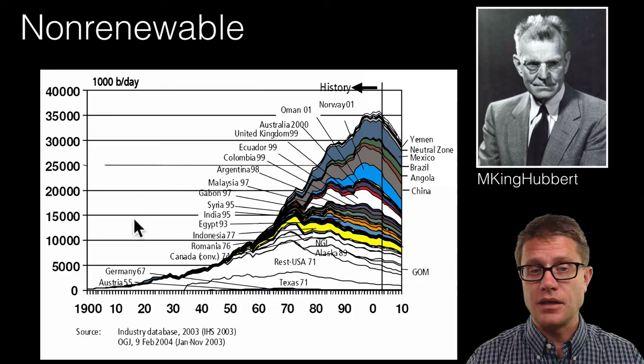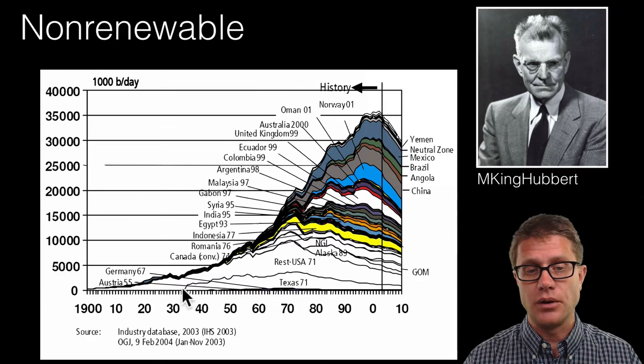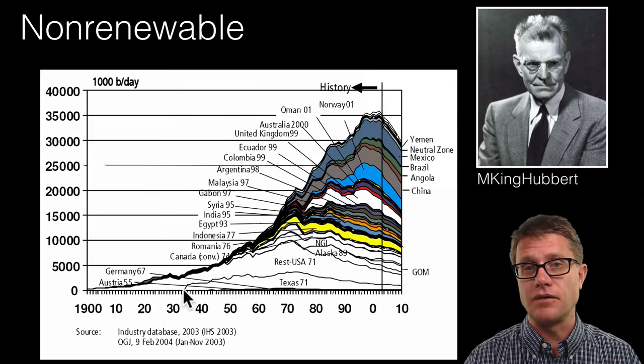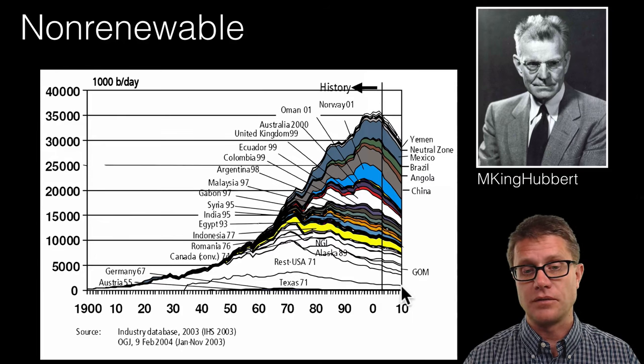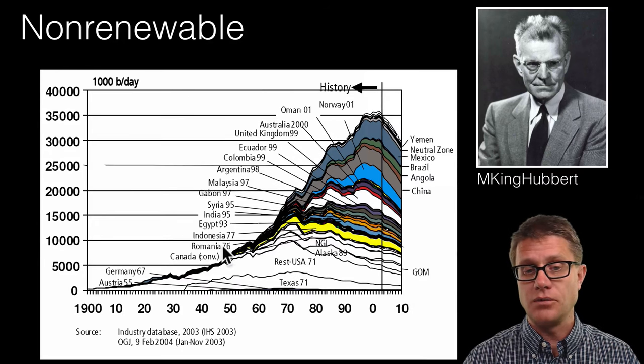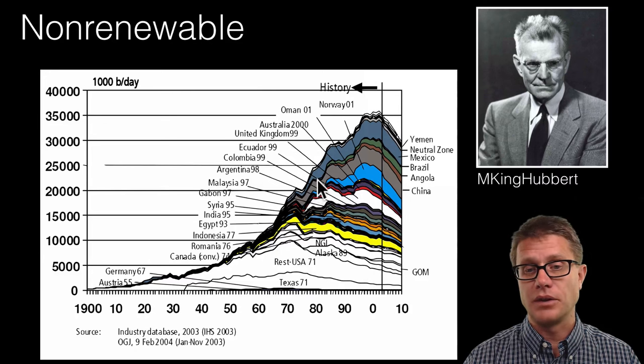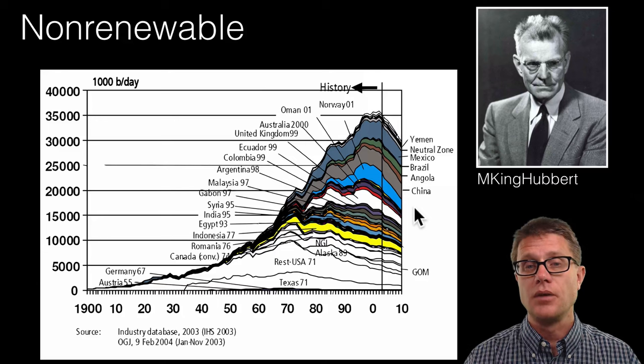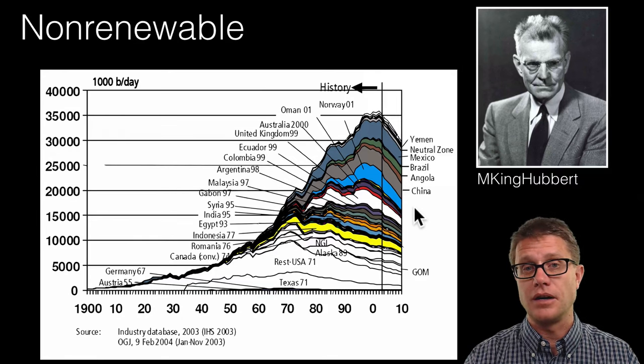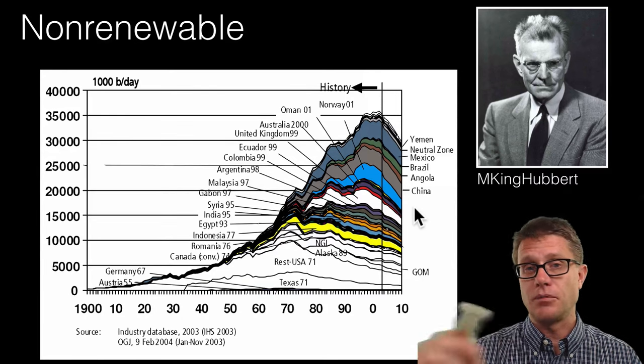This is Hubert's peak theory. And so if you look at for example oil extracted in Texas, once they discovered oil in Texas the amount increased and then it dropped off. If we look at other parts of the U.S., it increased and then it dropped off. Or Norway for example, it increased and then it dropped off. Once we discover minerals in an area we are going to deplete those minerals in an area. And so everything is going to have a peak.